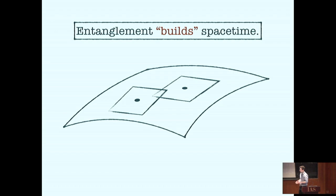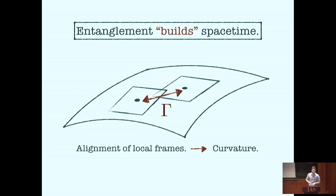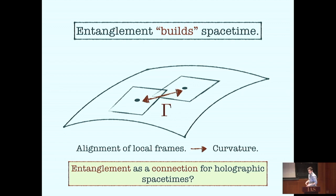In classical geometry, the way we think of building spacetime is by patching together little pieces of flat space — these are the tangent spaces of the points on a base manifold. The way we glue them together mathematically is by defining a connection, which serves as a map that aligns the local Lorentz frames defined on each of the tangent spaces. As a result of this gluing of these little flat spaces, we get the curvature of the spacetime.